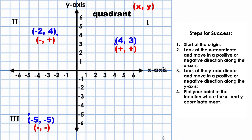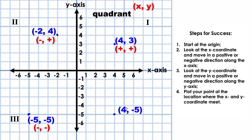Let's take a final moment to plot the next point. Starting at the origin, we look at our x-coordinate. The x-coordinate is positive 4, so we move positive 4 on the x-axis. Then we look at the y-coordinate, which is negative 5, so we're going to move negative 5 on the y-axis. The location of our point is right here. As you can see, any point located in quadrant IV is going to have a positive x-coordinate and a negative y-coordinate.